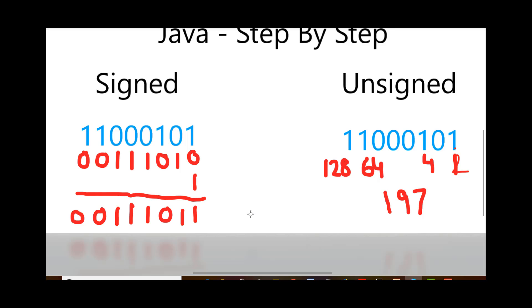Now let's find the magnitude of this 2's complement number. Adding the bit position values: 1, plus 2, plus 4, plus 8, plus 16, plus 32 gives us 48 plus 8 equals 56, plus 2 plus 1 equals 59. So the magnitude of the number is 59.